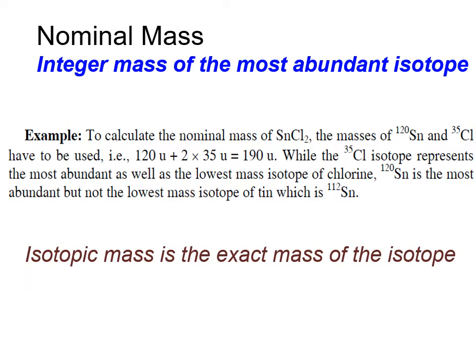The nominal mass, or mass number, is the integer mass of the most abundant isotope. The isotopic mass is the exact mass of that isotope. We mostly use whole numbers because the resolution of our most common instruments will not allow us to measure exact mass. However, measuring exact mass is possible and very helpful.